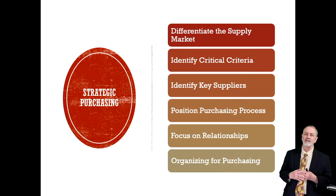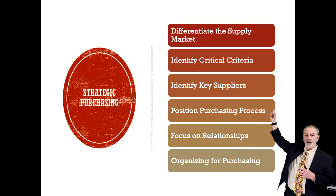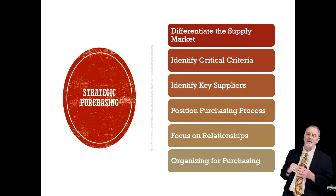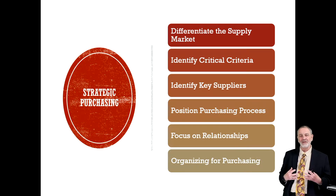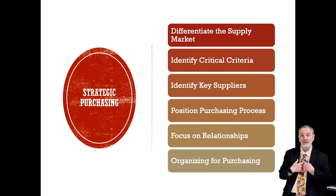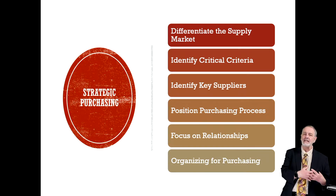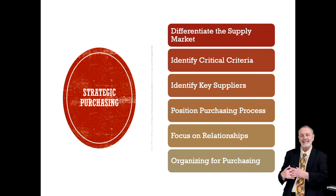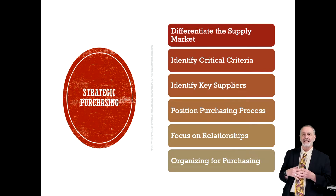We talked about the six building blocks of a procurement strategy. We start at the very top — differentiating the supply market. Not all purchases, not all suppliers are equal in terms of how they impact us. So we don't need to manage everything exactly the same. We need to identify what are the critical criteria.